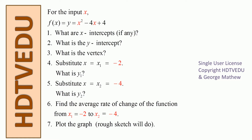We are given the function f(x) equals x squared minus 4x plus 4, where y equals f(x). The questions are: number one, what are the x-intercepts if any; number two, what is the y-intercept; number three, what is the vertex; number four, substitute x₁ equals negative 2, what is y₁; number five, substitute x₂ equals negative 4, what is y₂; number six, find the average rate of change from x equals negative 2 to x equals negative 4; and number seven, plot a rough sketch of the graph.